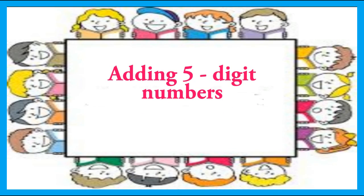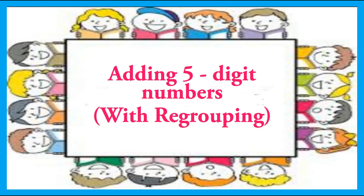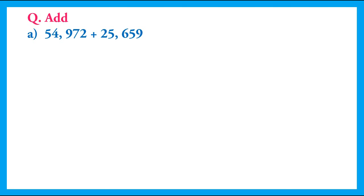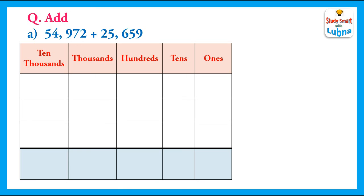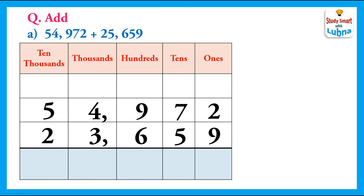Welcome students. Today we are going to learn how to add five-digit numbers with regrouping. We are going to add these five-digit numbers, so what is the first step? We will write these five-digit numbers below their place values. The place values are ones, tens, hundreds, thousands, and ten-thousands. We write these five-digit numbers below their place values one by one, and we put the addition symbol because we are going to add them.